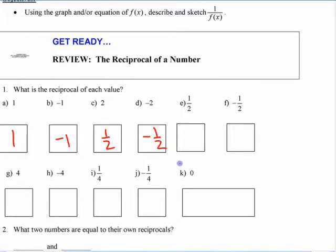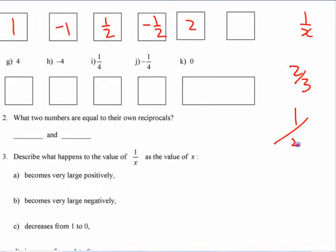The reciprocal of x is 1 over x. Even if it's a fraction like 2/3, the reciprocal is 1 over 2/3 or 3/2, right? You can write it two ways. You can say 1 over 2/3 or 3/2. Flip it over.